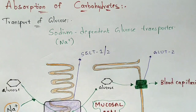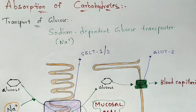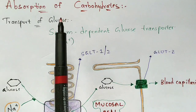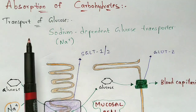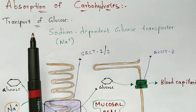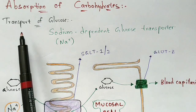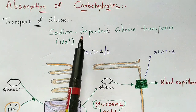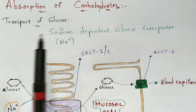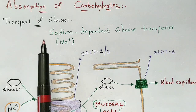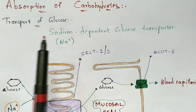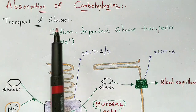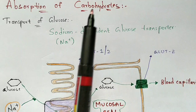The absorption of carbohydrates is one of the most important topics. I will explain the transport of glucose, and then cover galactose, fructose, and pentose. Transport refers to glucose moving from the intestinal lumen to the mucosal cell, and from the mucosal cell to the blood capillaries. The transport of glucose occurs by the sodium dependent glucose transporter.